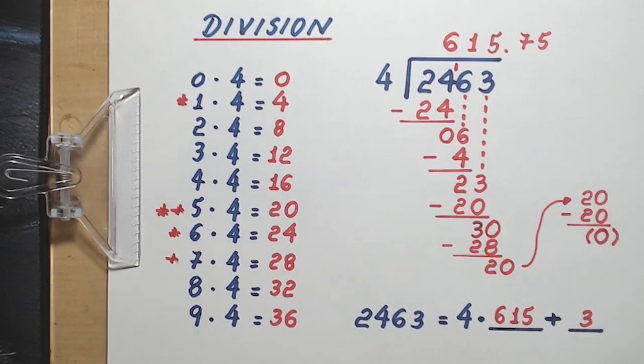What is 2,463 divided by 4? The answer is 615.75.